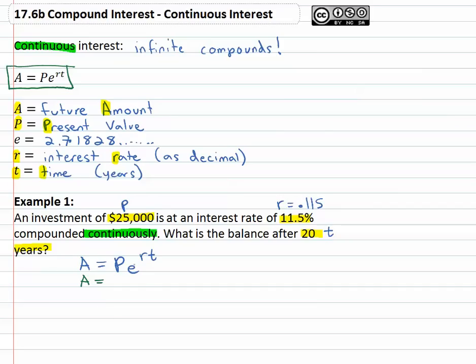So all we have to do is plug this information into our calculator. A equals P which is the 25,000, E that's going to be given to us by the calculator, R is point one one five times T which is twenty.